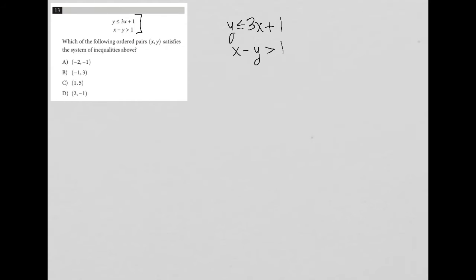The question asks which of the following ordered pairs x, y satisfies the system of inequalities above. I think the best method here would be to use a strategy called plug-in answers. Each of these answers is an x and a y value, and in order for it to satisfy the system, that means I should be able to plug those numbers in and it works in each case.